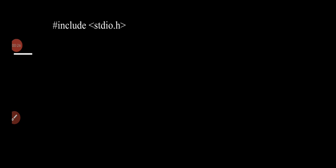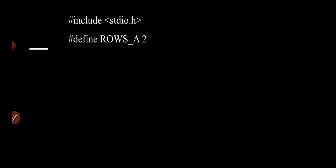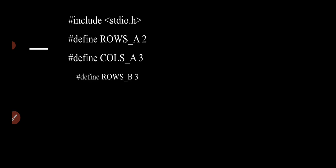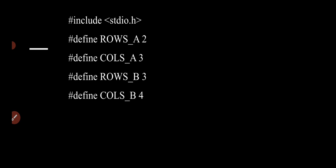The program starts with the standard input output header file stdio.h, and then we are defining values for rows and columns of matrix A and B. This is one type of defining constant values. We use #define ROWS_A — this is one naming convention where two different words are joined using underscore. So ROWS_A with value 2 means the number of rows of A is 2.